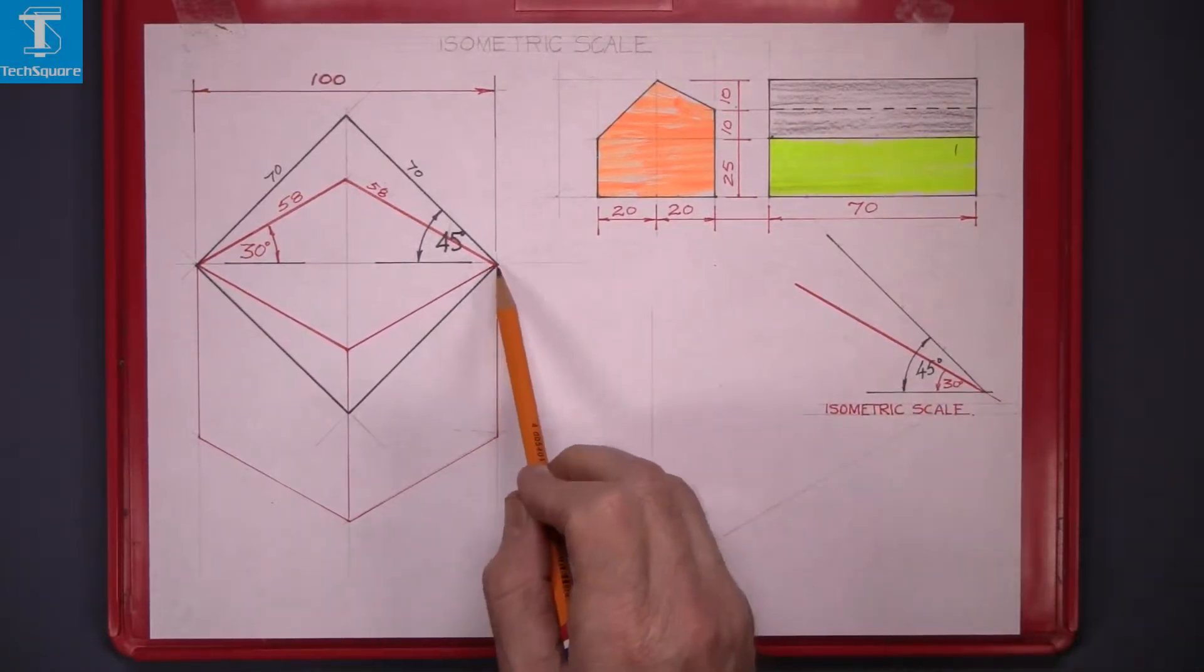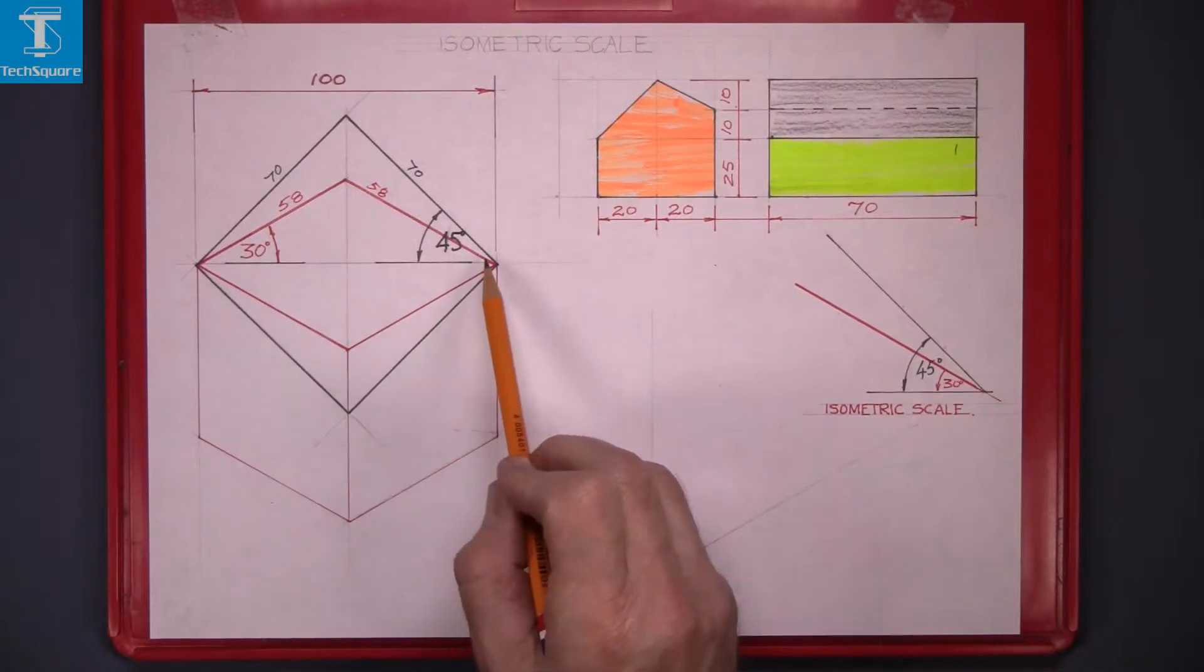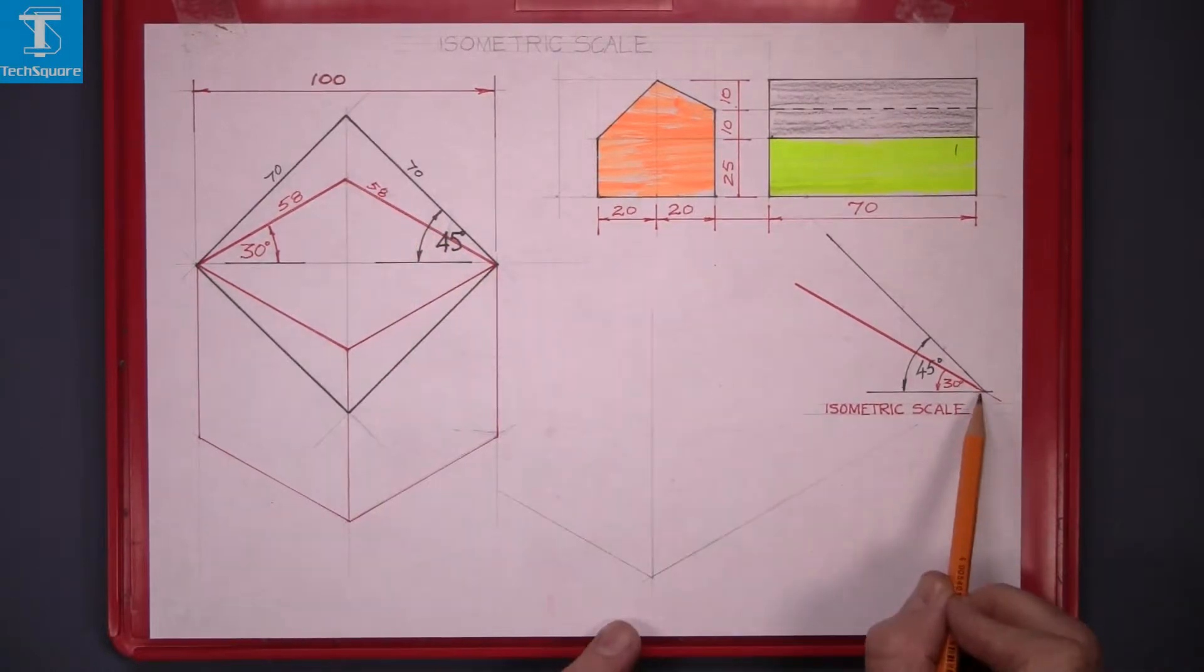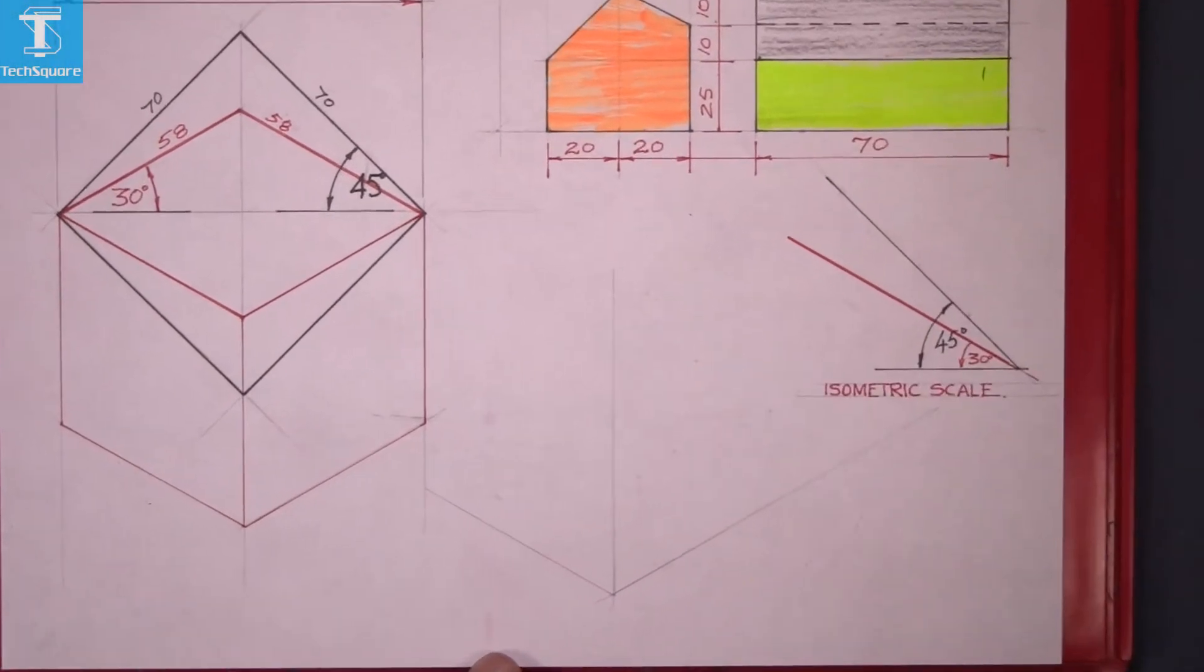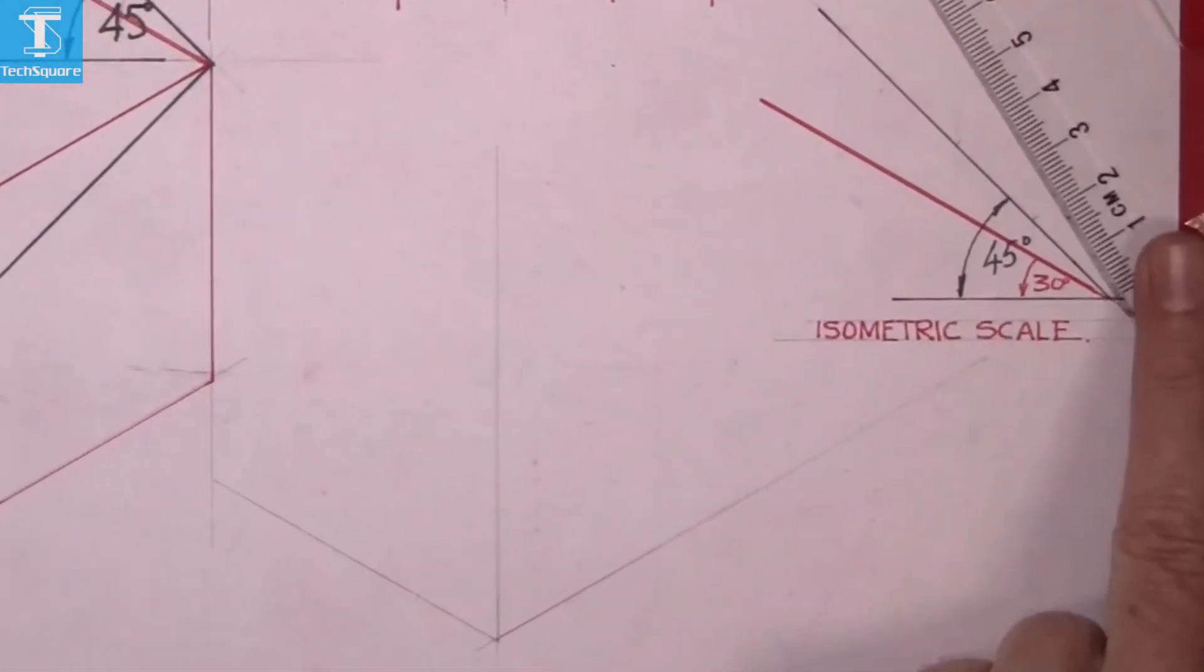Similar to before, 30 degrees and 45 degrees, 30 degrees, 45 degrees. Take the length of this side here, which is 70, mark it off on the 45 degree line.